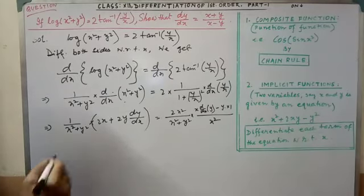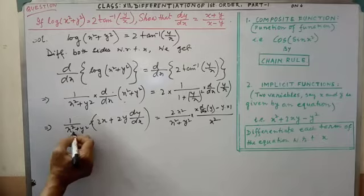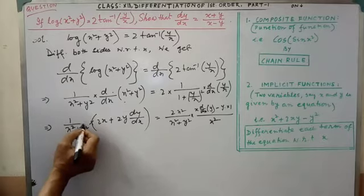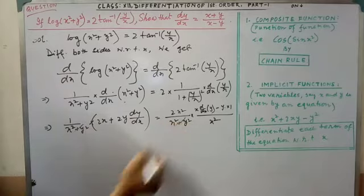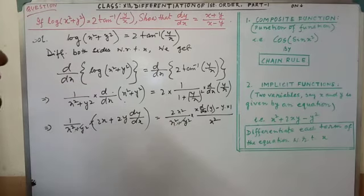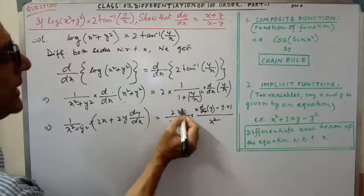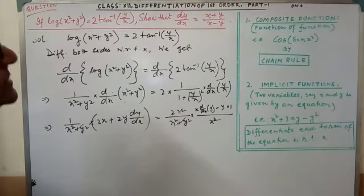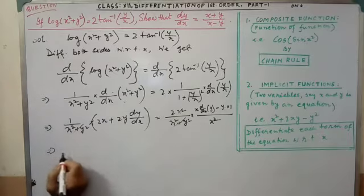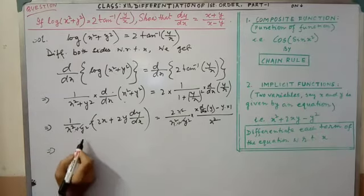So, now, we have to simplify. That is, in left-hand side, x square plus y square. In right-hand side, also, x square plus y square. It will be cancelled. Then, x square and x square. That also will be cancelled. After cancellation, see the simplification. What is coming?